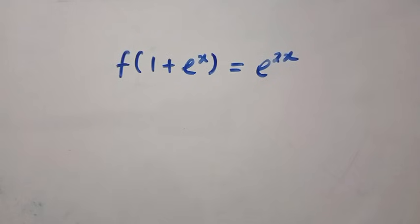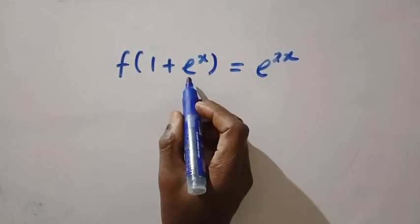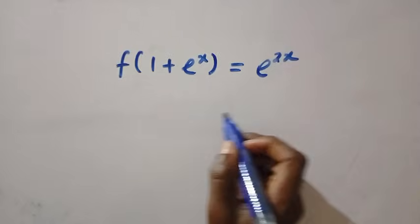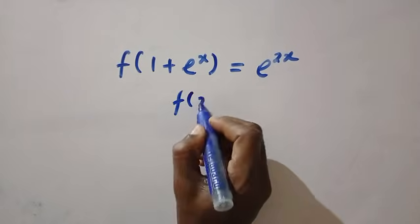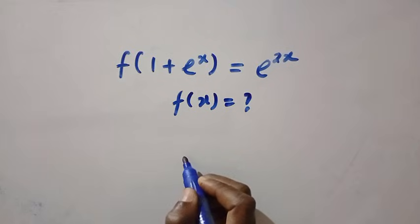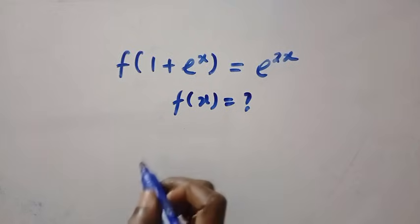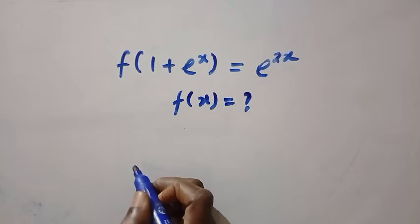Good day viewers, you are welcome. How do you solve this functional equation? Here is the question: f of 1 plus exponential x equals exponential 2x. We are interested to find f of x, but this is an exponent. How does it relate to finding just f of x? So this is an interesting question. Let's try and solve this in two different methods.